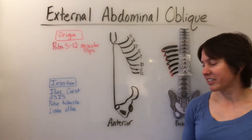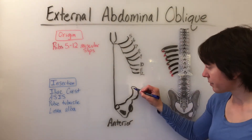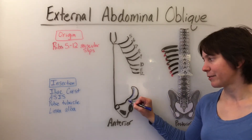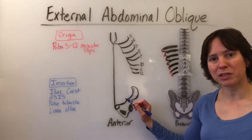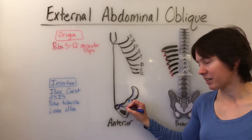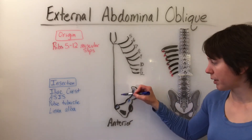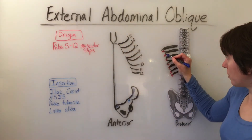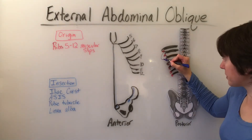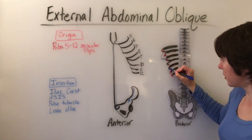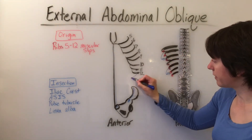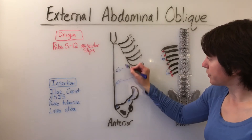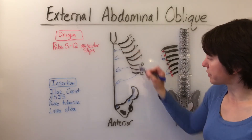The insertion is the iliac crest, the ASIS, pubic tubercle, and the linea alba. So the muscle will run from the muscular slips around the posterior side to insert on these locations.